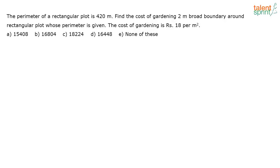The perimeter of a rectangular plot is 420 meters. Find the cost of gardening a 2-meter broad boundary around the rectangular plot whose perimeter is given. The cost of gardening is rupees 18 per meter squared.